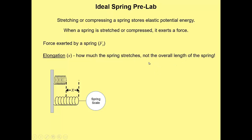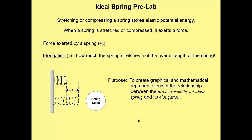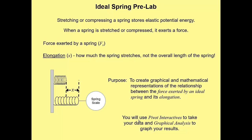You could measure the unstretched length and subtract, but in Pivot Interactives it's probably just as easy to measure the stretch directly. There are instructions in the Pivot Interactive to help you set it all up correctly, plus a little example with a multiple choice question so you can check whether you're using the program correctly. The purpose of the lab is to create graphical and mathematical representations of the relationship between the force exerted by an ideal spring and its elongation.